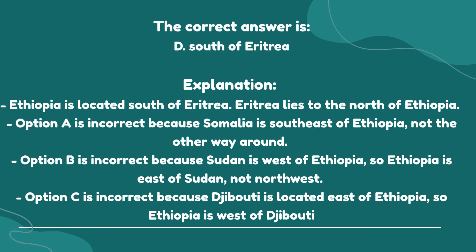The correct answer is D. South of Eritrea. Explanation: Ethiopia is located south of Eritrea; Eritrea lies to the north of Ethiopia. Option A is incorrect because Somalia is southeast of Ethiopia, not the other way around. Option B is incorrect because Sudan is west of Ethiopia, so Ethiopia is east of Sudan, not northwest. Option C is incorrect because Djibouti is located east of Ethiopia, so Ethiopia is west of Djibouti.